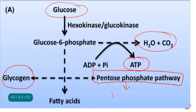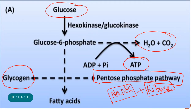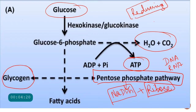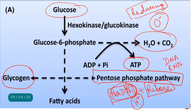The pentose phosphate pathway is a powerhouse that gives us NADPH and also makes ribose sugars. This ribose and NADPH are very important for the production of ribonucleotides needed for DNA and RNA formation. NADPH is also called the reducing molecule — whenever we have oxidative stress from free radicals, NADPH uses its H⁺ moiety to combine with oxygen and convert it into harmless water.